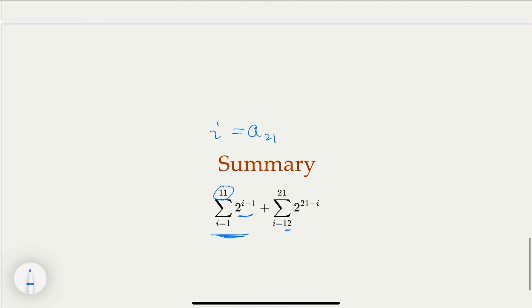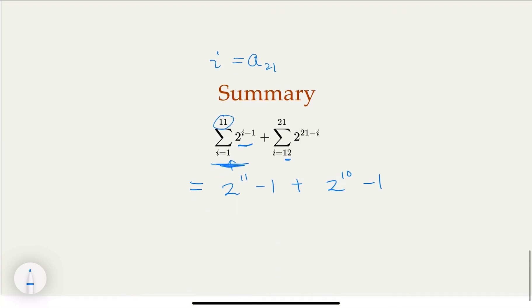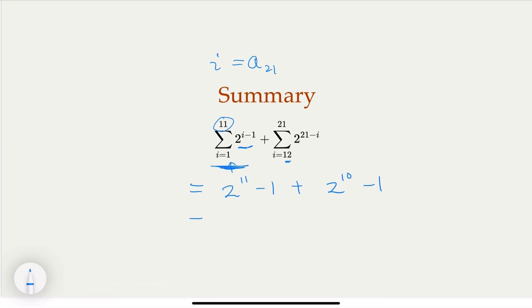So using this fact, so this is going to be equal to, in the first case, that will be equal to 2 to the 11th power minus 1, plus this, in this case, I would have 2 to the 10th power minus 1. So if you add them together, so this is going to be 1, 0, 2, 3, this is going to be 2, 0, 4, 7, if you add them together, the final answer would be 3070. So that would be the answer.